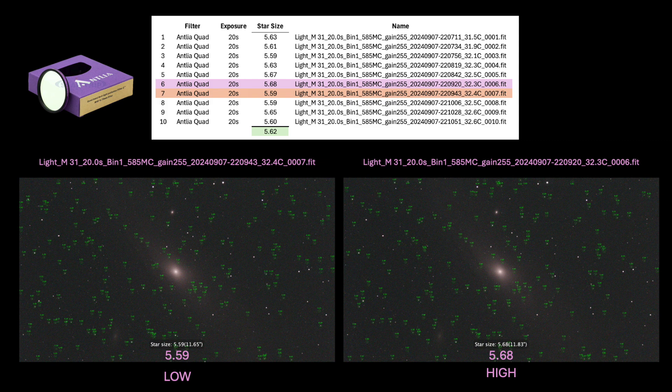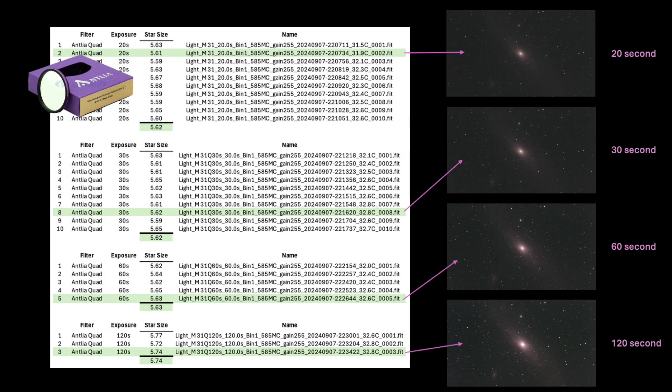Within a set of subframes, like the 10 quad band subframes shown here, the star sizes and calculation values show remarkable consistency. They deviated from 5.59 to only 5.68 across this entire group. That is less than a 2% difference between the high and low values. The 20 second exposure group of the Antlia quad band filter data had an average value of 5.62. The 30 second and 60 second exposure groups had very similar average star size values, but the 122 image set had star sizes that appeared to be measurably larger with a value of 5.74.